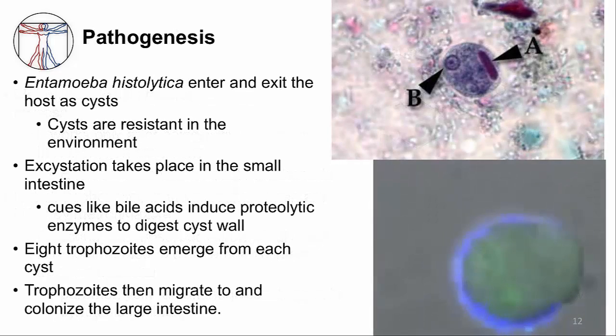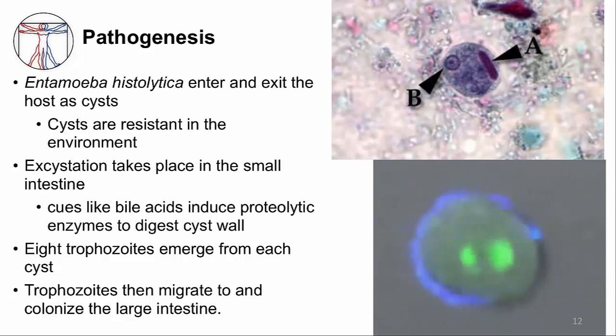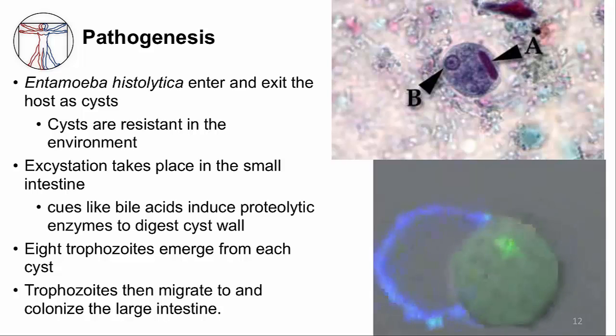So how does Entamoeba histolytica cause disease? If we go back to our framework, the pathogen has to enter, colonize, and persist in the right environment. Entamoeba histolytica enters and exits the human host as cysts. These are very resistant and last days to weeks in the environment and are not destroyed by the acid in the stomach. When the cysts reach the small intestine, the bile acids serve as a cue to induce proteolytic enzymes that digest the cyst wall from the inside. In the movie, you can see an amoebic cyst where the cyst wall is labeled in blue and the parasite digests the cell wall to emerge. Out of each cyst, eight trophozoites emerge and then migrate to the large intestine and colonize the colon.